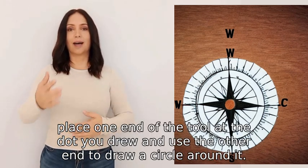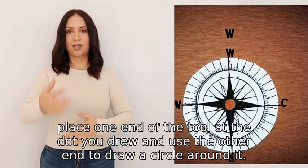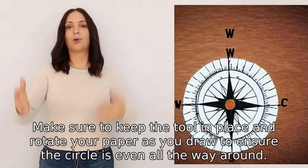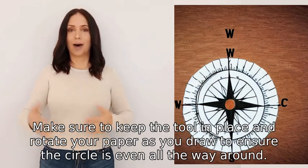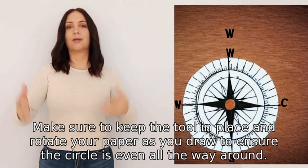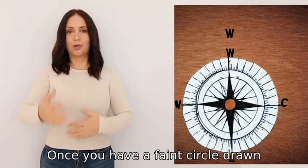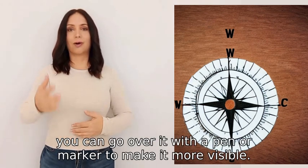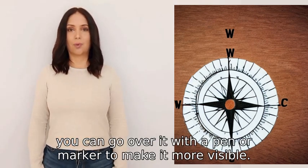Use the other end to draw a circle around it. Make sure to keep the tool in place and rotate your paper as you draw to ensure the circle is even all the way around. Once you have a faint circle drawn, you can go over it with a pen or marker to make it more visible.